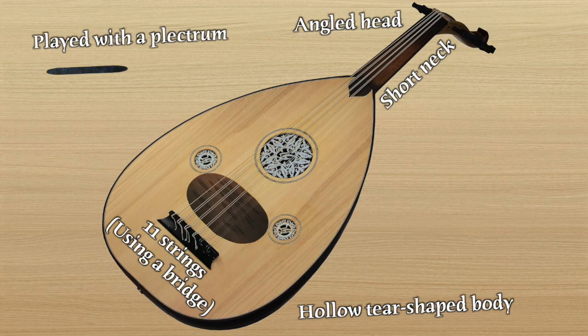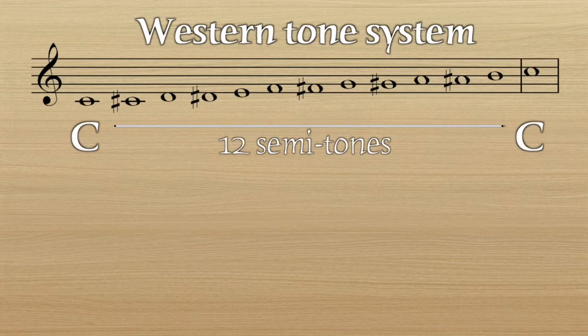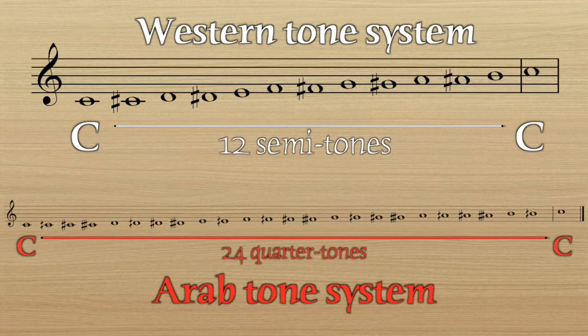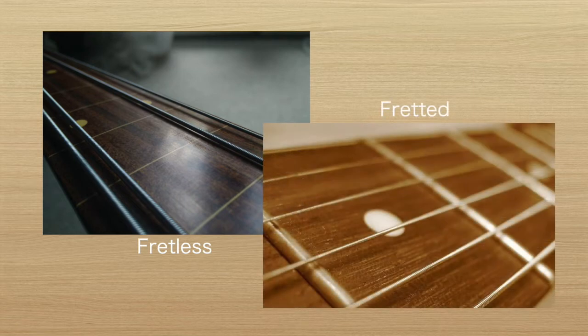They're usually played with a plectrum, but you may notice that there are no frets like a modern guitar usually has. This is because the system of scales commonly used on an oud are quite different to our western scales in that they often incorporate smaller note divisions. For example, we have 12 semitones between a C and an octave of that C, but in the Arab tone system they may have 24 quarter notes in that same tonal range. Having a neck with no frets means the player can access all of those half-flat notes that are impossible to play on a fretted instrument, because frets split up the system into 12 semitones.